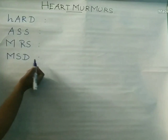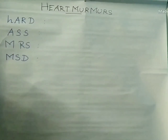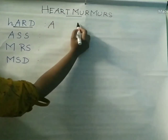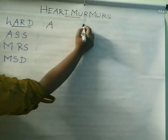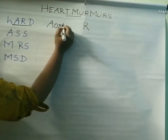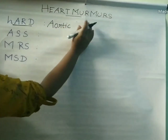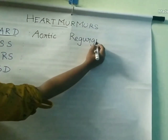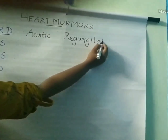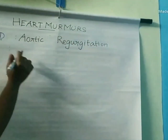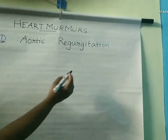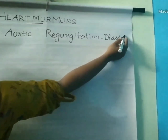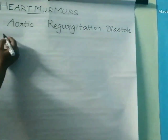First, we go to HARD. The letters A and R stand for aortic regurgitation, and the last letter D stands for diastole. So in aortic regurgitation condition, the murmur will be found in diastole. Diastolic murmur is seen in aortic regurgitation condition.